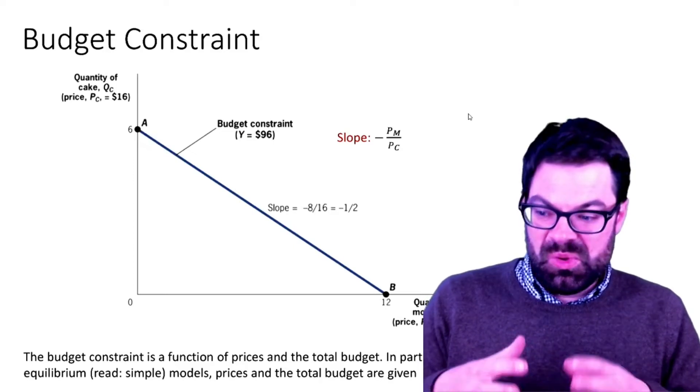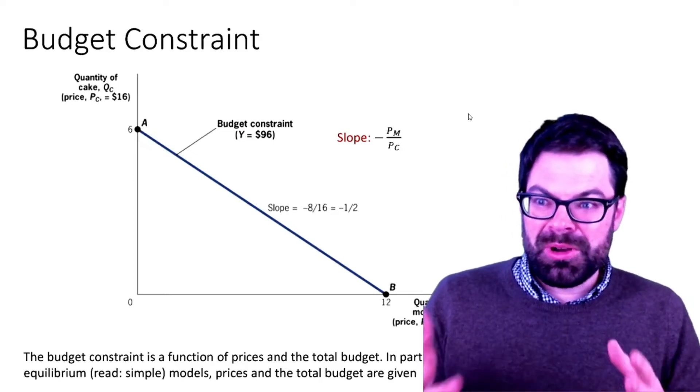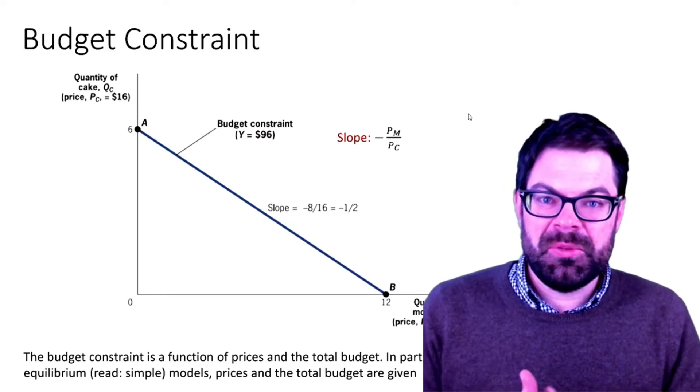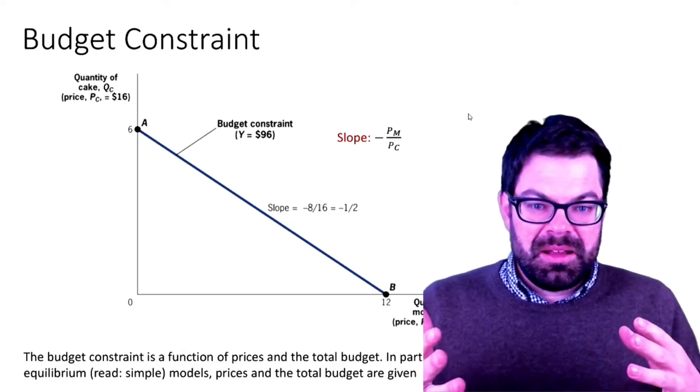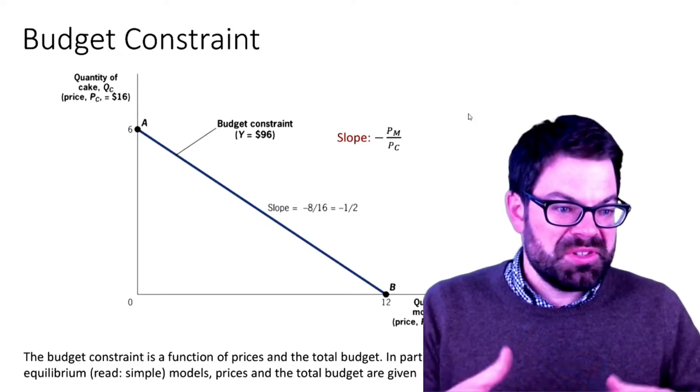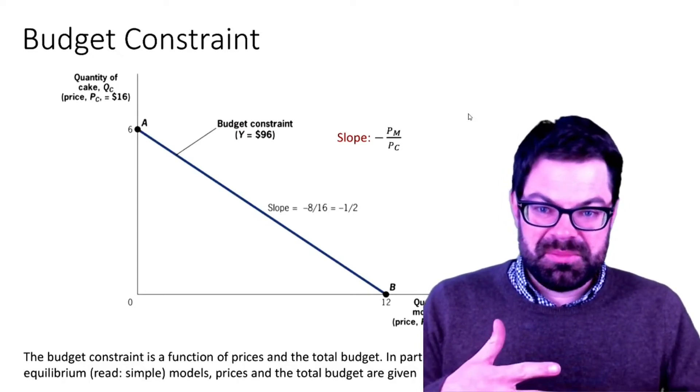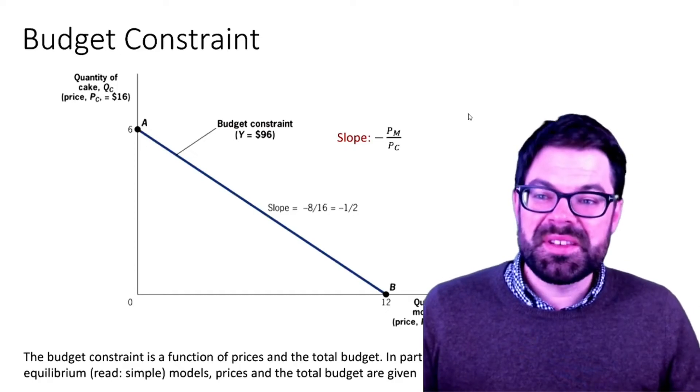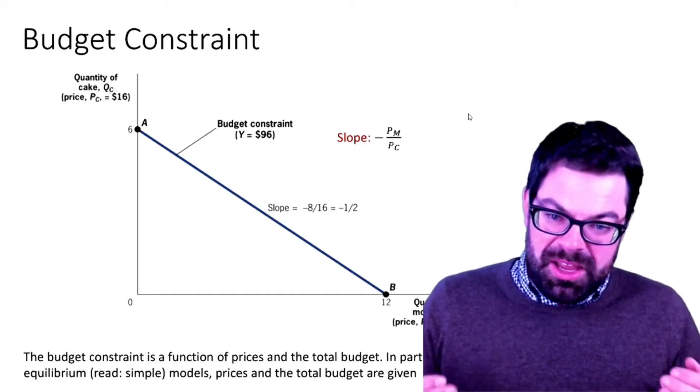In the most basic of microeconomics we model consumer behavior as the maximization of a person's utility. A person maximizes utility by purchasing goods subject to a budget constraint.